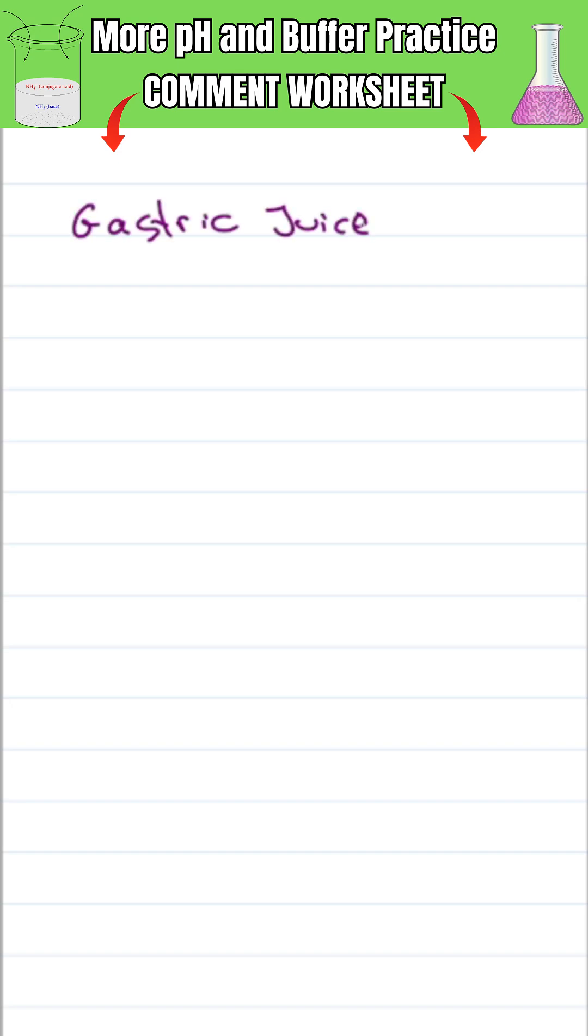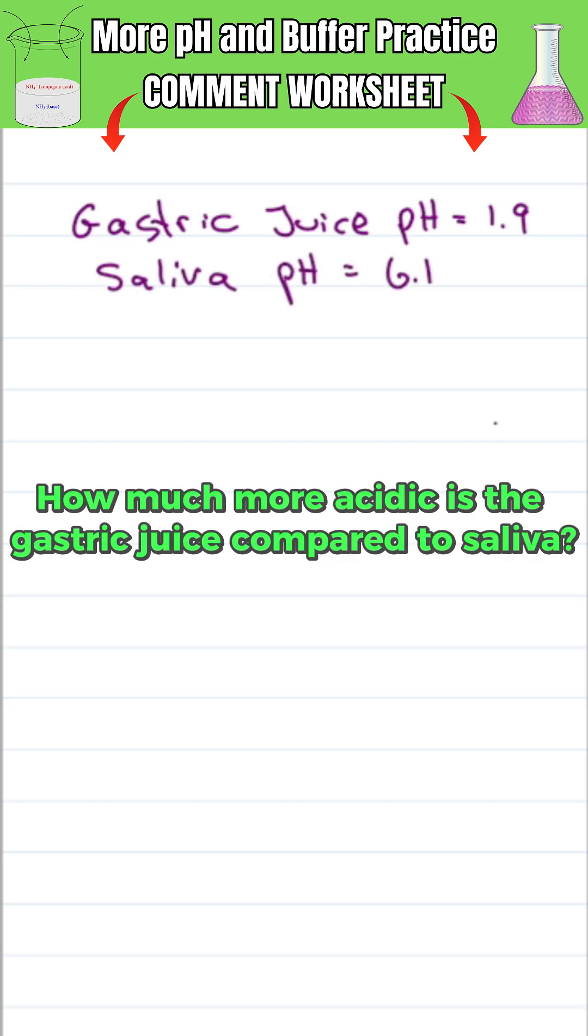If a patient's gastric juice has a pH of 1.9 while their saliva has a pH of 6.1, approximately how much more acidic is the gastric juice compared to their saliva?